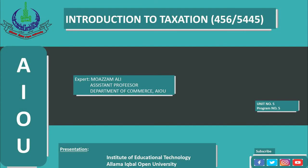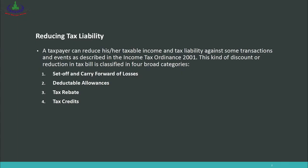Dear students, welcome to the video lecture on business taxation. Today we will discuss Unit Number Five, which is about reducing the tax liability of a person. Previously in Unit Three and Unit Four, we discussed the calculation of tax liability from all heads of income. In this unit, we will discuss how that tax liability can be reduced in a legal way. A taxpayer can reduce his or her taxable income and tax liability against some transactions and events as described in the Income Tax Ordinance 2001.